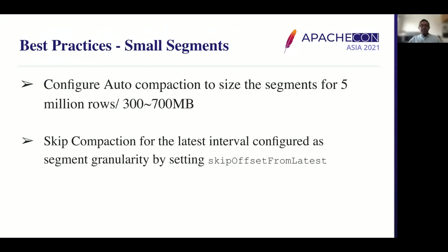As discussed, small segments can occur in the cluster and impact query performance. A best practice is to size segments so that each has 5 million rows or a size between 300 to 700 MB. This can be done by configuring auto-compaction. Each time data is ingested, the time interval is locked, meaning no other task is allowed to write data. Compaction is a kind of batch indexing where multiple segments are read and written as a single segment. When defining compaction, you should skip the latest interval by setting skip offset from latest — otherwise compaction will fail since it cannot acquire the segment lock.